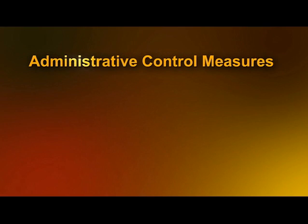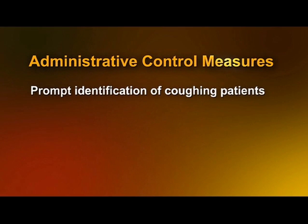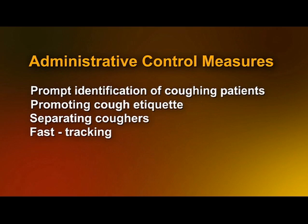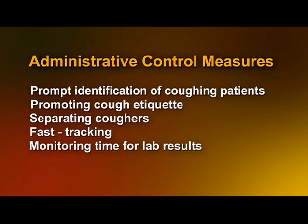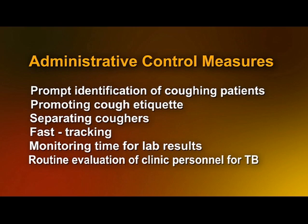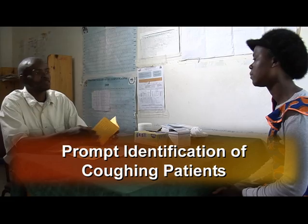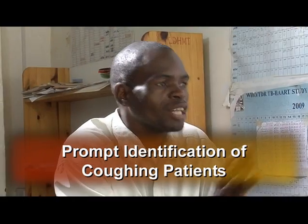The basic building blocks of infection control are the administrative control measures, and should be implemented by all members of the team. These measures include prompt identification of coughing patients, promoting cough etiquette, separating coughers from other patients, and fast tracking for prompt diagnosis and treatment. They also include monitoring the time it takes to get laboratory results back, such as sputum smear results, and assuring the routine evaluation of clinic personnel for TB. It is the undiagnosed and untreated TB patient that presents the greatest risk to others.